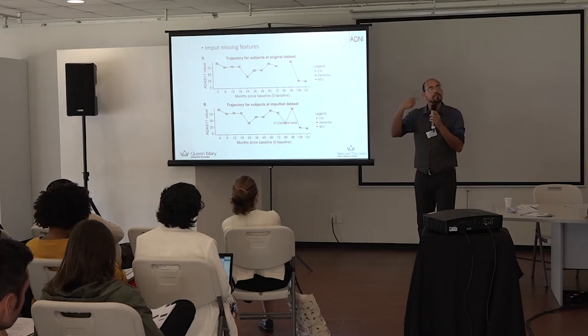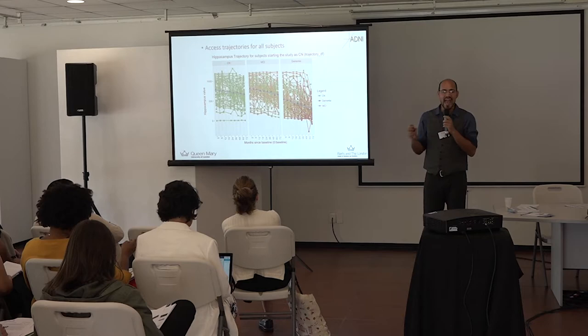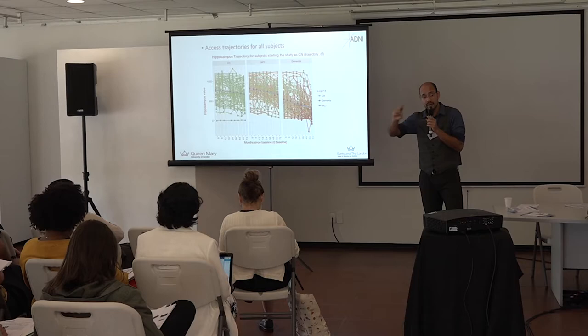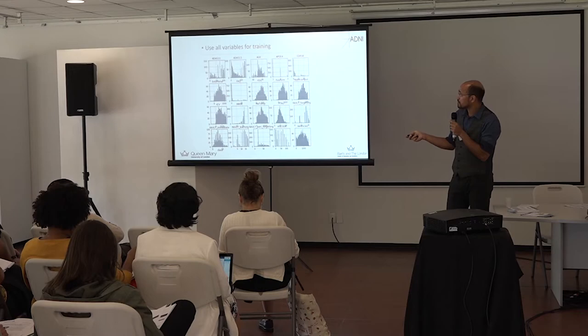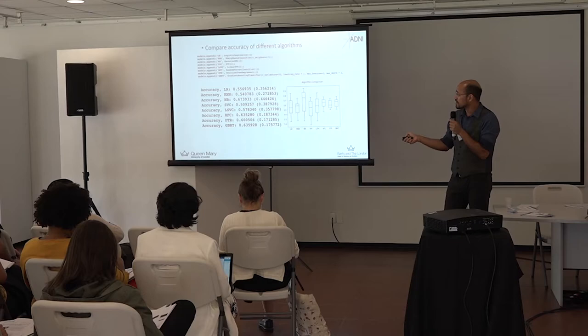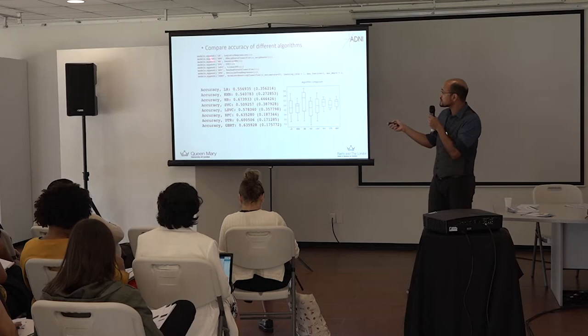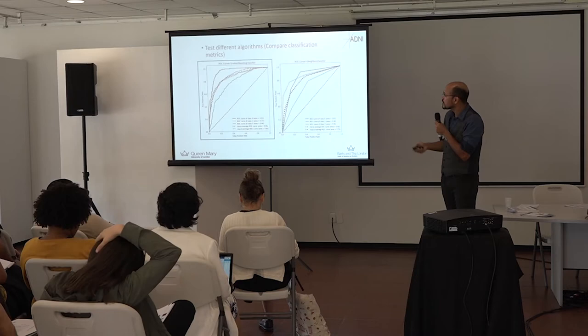After imputation, for every variable in my dataset — such as hippocampus — I can track the trajectory of that value along my cohort from baseline to month 72. I use all these variables for training my machine learning model. I compare different types of machine learning functions implemented in Python scikit-learn: logistic regression, k-neighbors classifier, support vector classifier, and so on. Then I select some of them to test against my test dataset.